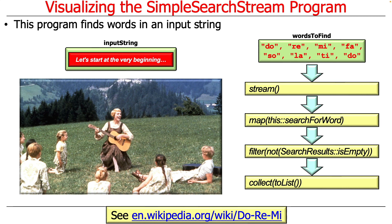Maria von Trapp sings to the children to teach them the names for musical notes — Do Re Mi. If you've never seen it, you should Google it, it's pretty funny. We're going to use that as the input for this program, and we're going to look for the words to find like Do Re Mi Fa So La Ti Do, find those in the input, and print out where they occur.